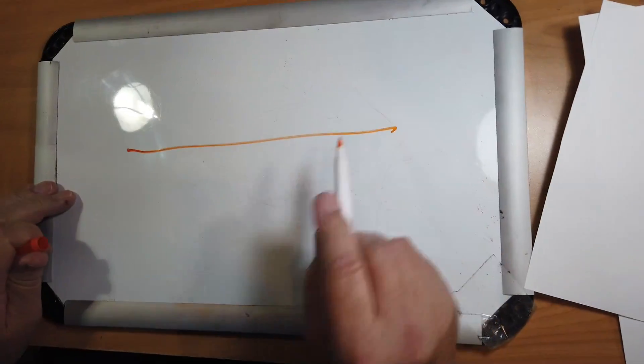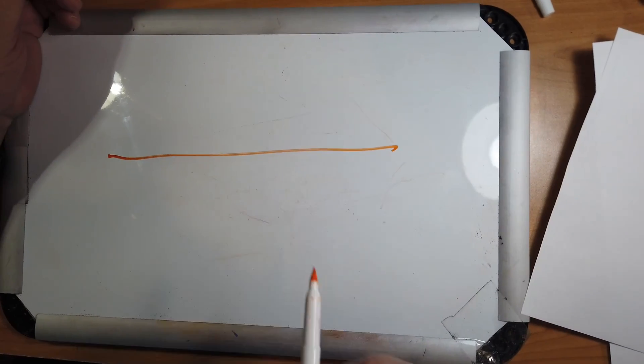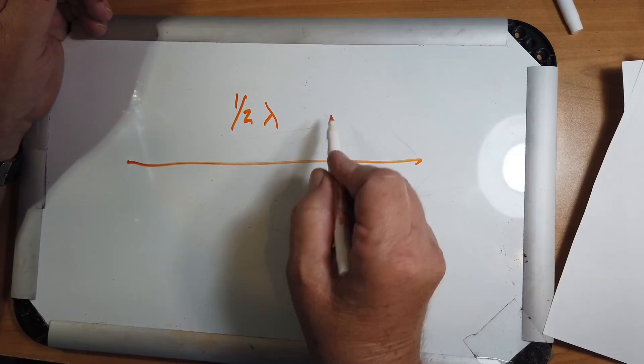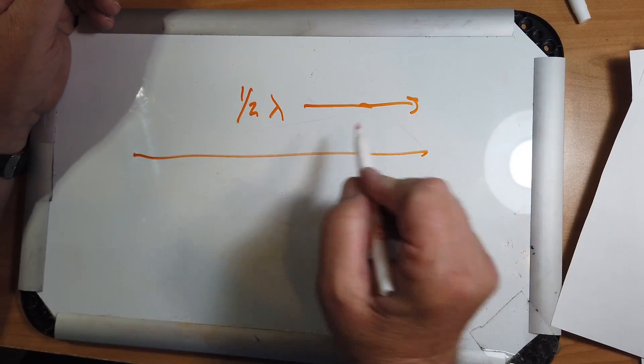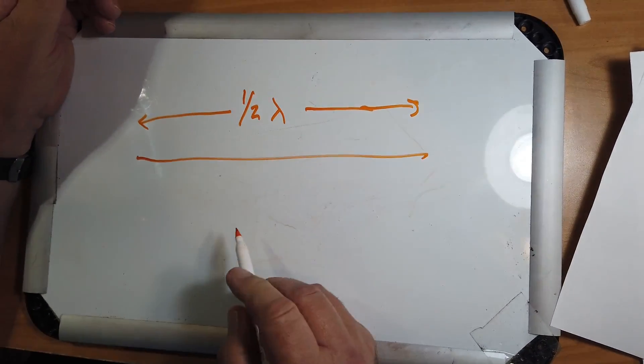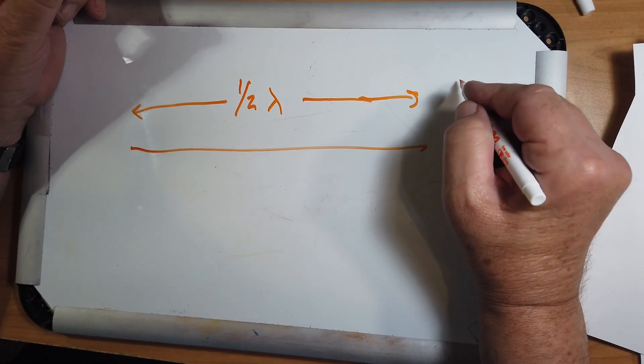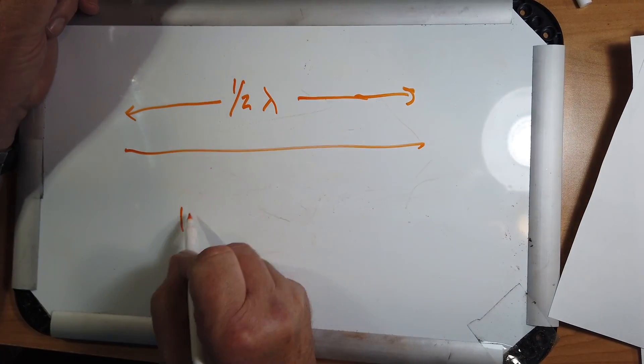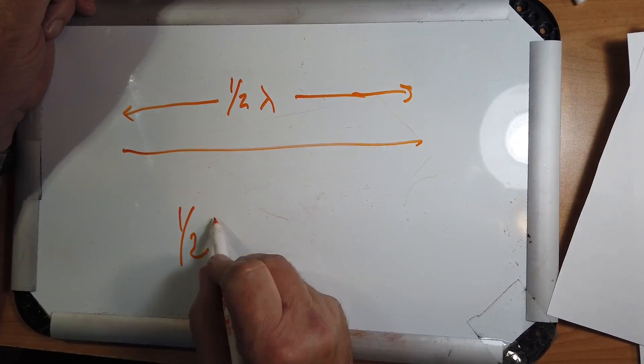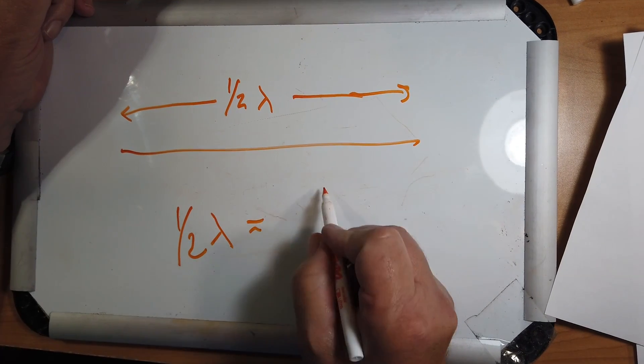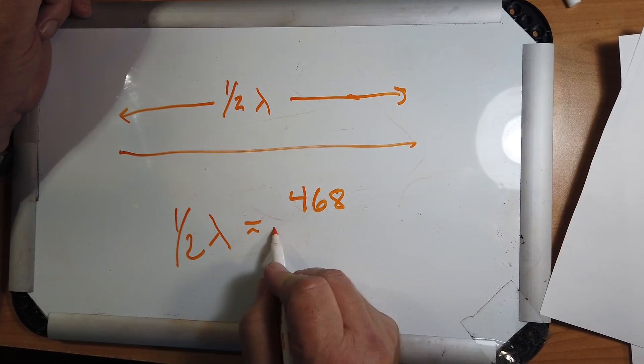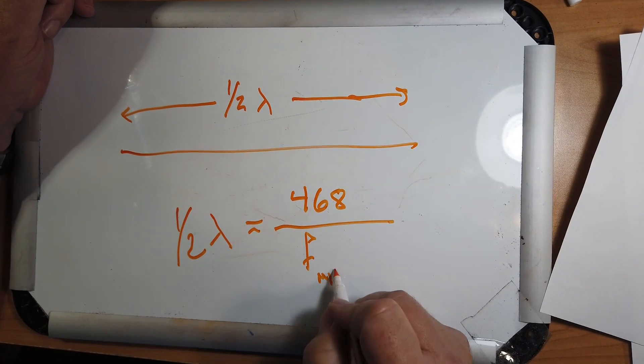Okay, let's take a look at this. There is a misnomer here. A dipole at HF in ham radio practice is one-half wavelength long from end to end. We can take the formula of the length, and this is one-half wavelength. One-half lambda equals 468 over the frequency in megahertz.